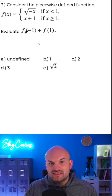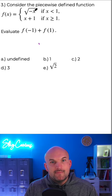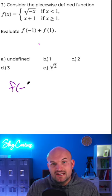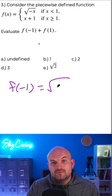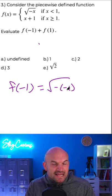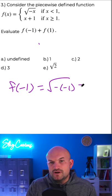So if I want to evaluate the function f of x for negative 1, I'm only going to plug it into this function because that's how the function is defined. So f of negative 1 is going to equal, we're just going to plug in a negative 1 in for the x. Now, negative negative 1 is going to be positive 1. Square root of 1 is just going to be 1.